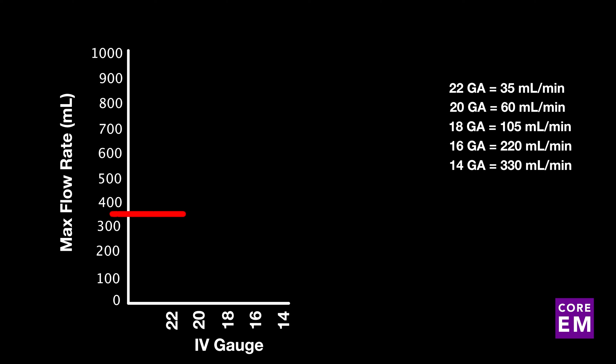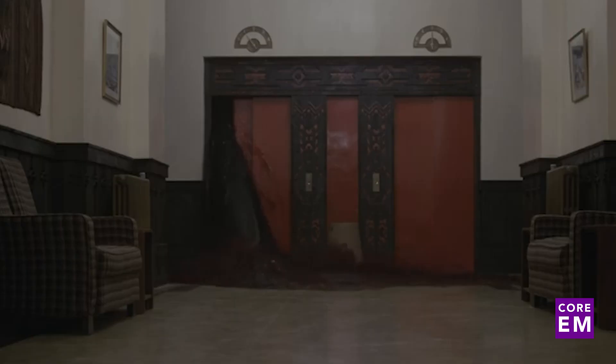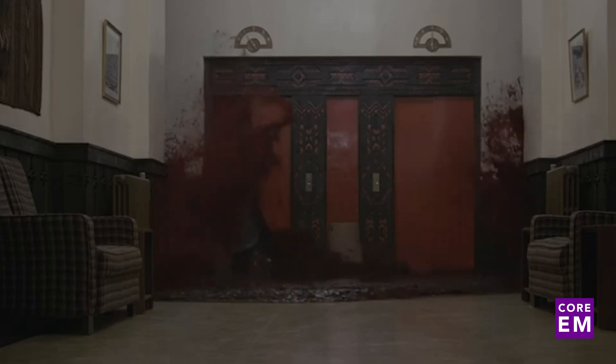This is a line that shows the flow rate of the cordis. And if you have bilateral peripheral gauges, these are your rates. This is why it's probably better to place two bilateral 16 gauge IVs than a cordis, because you can get more volume into the patient and you can probably get that IV faster than placing central access.